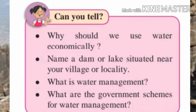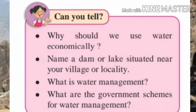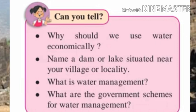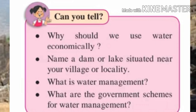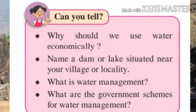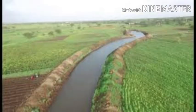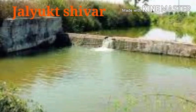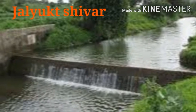Students, can you tell why we should use water economically? Name a dam or lake situated near your village or locality. What is water management? What are the government schemes for water management? Think on these questions and try to find answers. Do you know — our government has started a project, Jalyukta Shiva, to make Maharashtra a drought-free state.